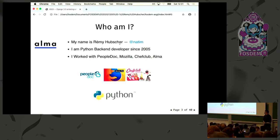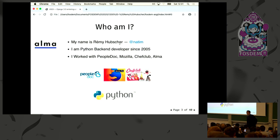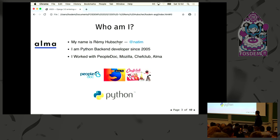My name is Remy Hupcher. I'm Natim on Twitter. I've been coding with Python since 2005. I work for PeopleDoc, a company in France that does HR document management. Then I worked for four years at Mozilla, and the last past year I worked with Chef Club. And Monday I'm starting with Alma — a company that does installment payments for online shopping applications.